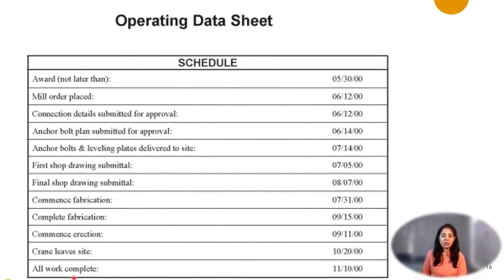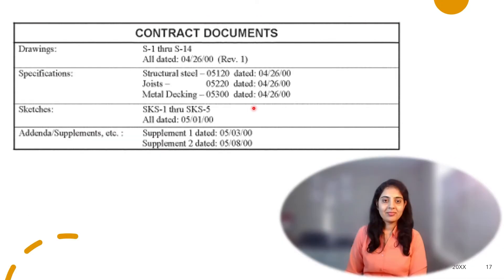The schedule of work shows which work will be done on which date — for example, material order will be placed on 06/12 and fabrication will be completed on 09/15. The contract documents section includes drawings such as S1 through S14 with dates and revisions, along with specifications, sketches, and supplements.